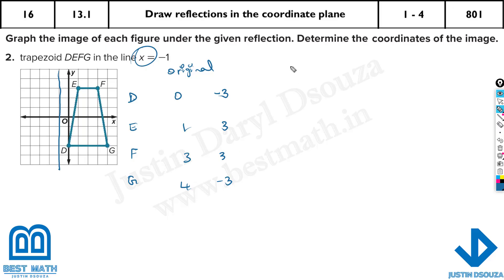Now here it's not just reflected by swapping x and y — that swap was for y is equal to x. Here you need to take x is equal to minus 1 as the mirror where the shape is getting reflected. You need to find the distance between each point and this line.